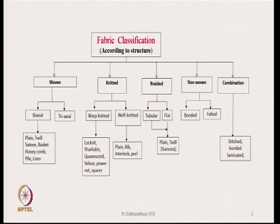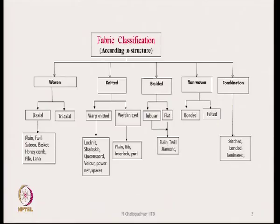In woven fabrics, we can have biaxial and triaxial. In knitted, we can have warp knitted and weft knitted. Braided fabrics can be tubular braid or flat braid. Non-wovens can be bonded and felted type, and in combinations we can have stitched, bonded, or laminated. So there are many fabrics in front of us, and whenever we think of a specific product, the question will come: which fabric should be chosen?